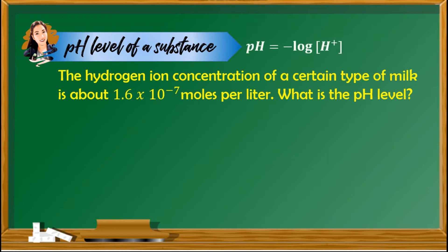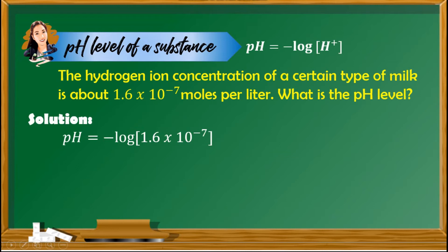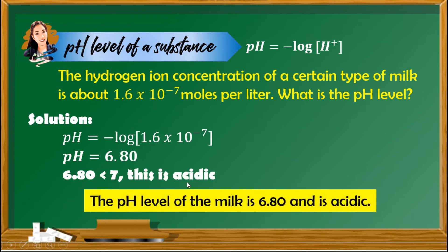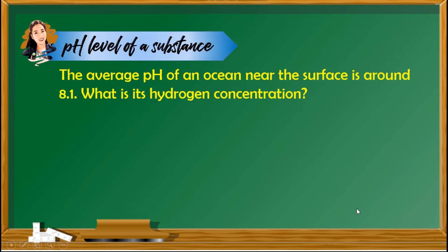Following the formula, pH equals the negative logarithm of 1.6 times 10 raised to negative 7, which gives pH equal to 6.80. Since 6.80 is less than 7, this is acidic. So we can conclude that the pH level of a certain type of milk is 6.80 and is considered acidic.